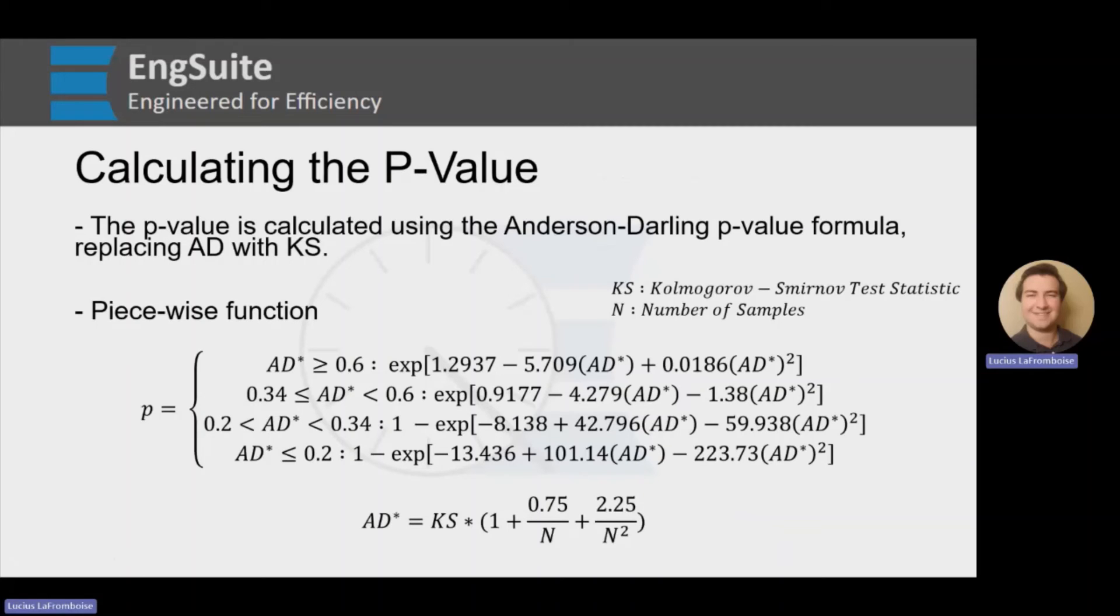Calculating the p-value is complicated, but what's nice is we've already talked about it, because the p-value is actually calculated using the Anderson-Darling p-value formula. We're just replacing AD with KS. So it's the same piecewise function here, except when we calculate this AD star, we just plug in KS for the Anderson-Darling test statistic. So that's pretty cool. We already have the math for that.